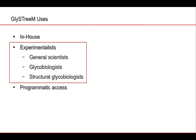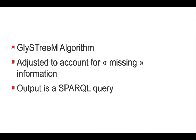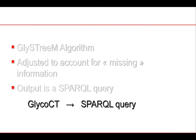For experimentalists, if a general scientist wanted to query this database they need to generate SPARQL queries, which is not a trivial matter and also presents the potential to include errors. So we needed a method to automatically generate these substructure queries. We took the algorithm used to generate GlyStream, adjusted it to account for missing information, and the output is actually a SPARQL query — so we go directly from our GlycoCT string to a query.